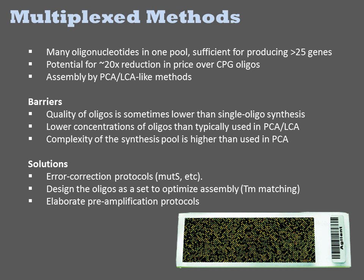As of 2014, one commercial supplier, Gen9, is supplying DNAs fabricated in this manner, but several others are expected to begin production soon. Despite the alternate sourcing of the oligos, the molecular biology procedures for assembling the oligos into larger DNAs still involve PCA or LCA-like reactions.